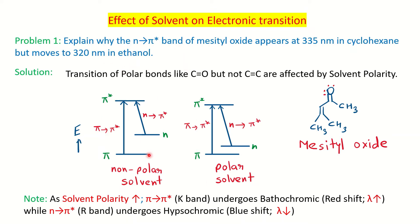To understand why, we'll use an energy level diagram. First, something very important: this solvent polarity effect occurs only for molecules which bear a carbonyl group. If the molecule doesn't have a carbonyl group and has only C=C, solvent polarity will show no effect. Mesityl oxide has an α,β-unsaturated carbonyl group, so both n→π* and π→π* transitions are possible here.